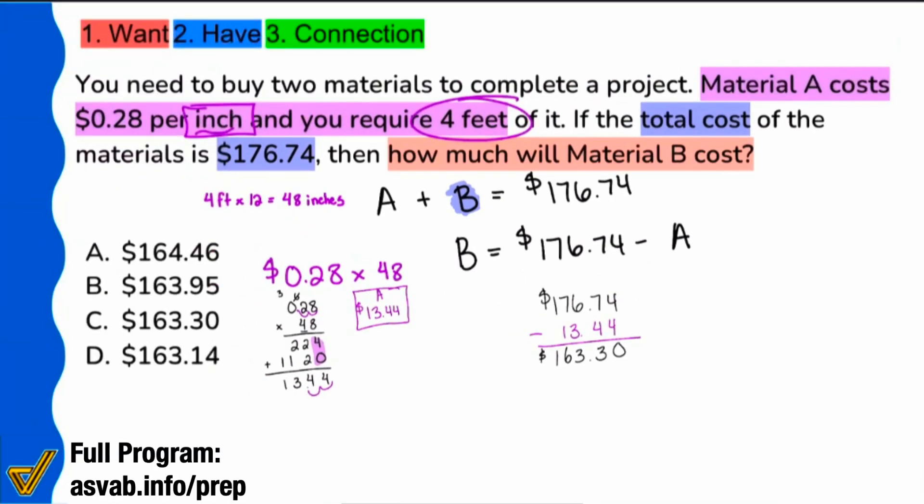$163.30. That would end up being the final answer, representing the cost of material B. So the correct answer here is C. Now, my math party people, let me know if you like the way this video was presented to you. My name's Coach Anderson. Comment, like this video, and subscribe for more. We'll see you soon.